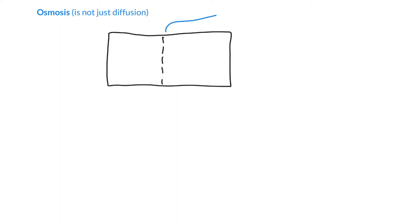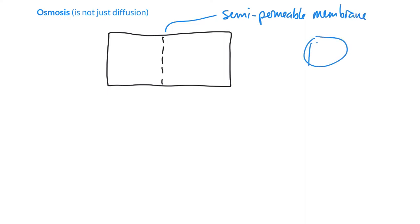Imagine you've got a container, and I've drawn a dotted line in the middle. This dotted line is what we call in the biz a semi-permeable membrane. You can think of the semi-permeable membrane like a tennis racket — if you look down a tennis racket, you've got a grid that looks something like that.